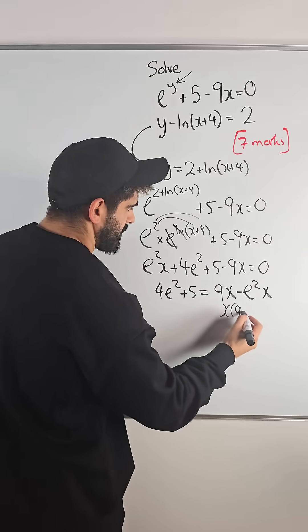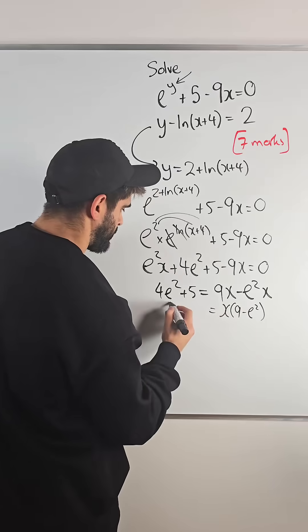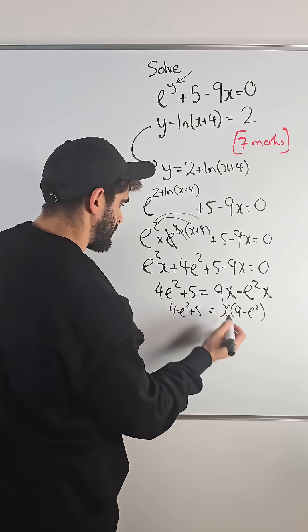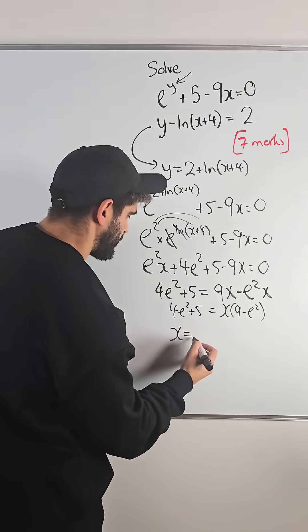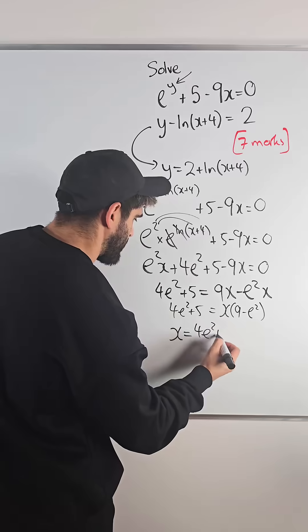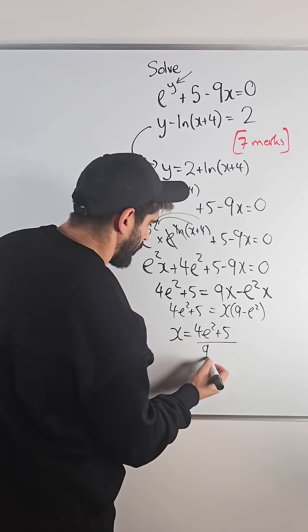Then I'm going to factorize out x, 9 minus e squared, then divide by the bracket. So you get 4e squared plus 5 over 9 minus e squared.